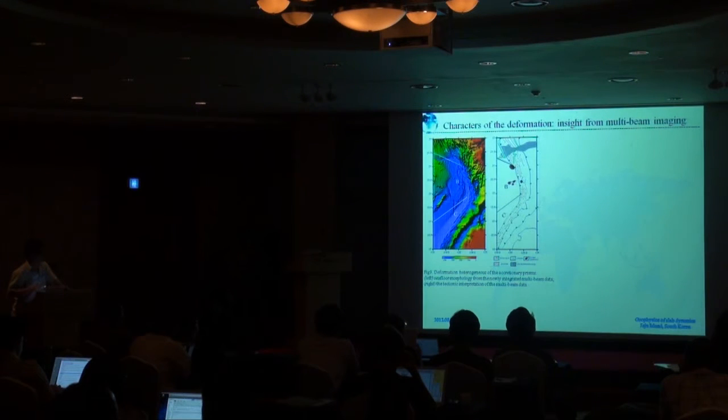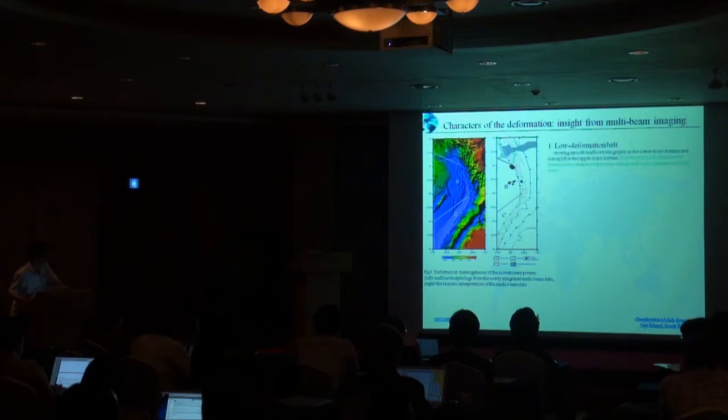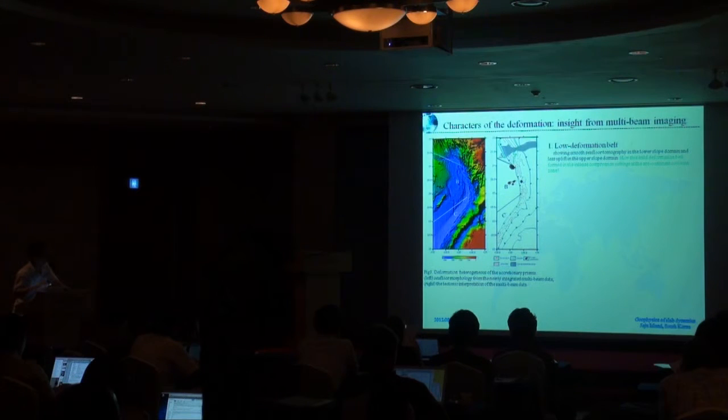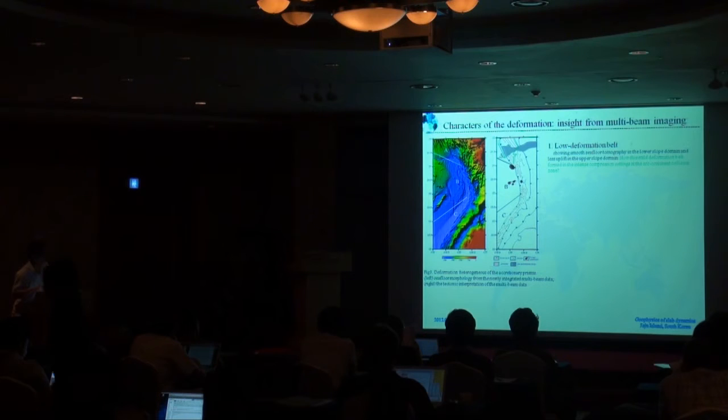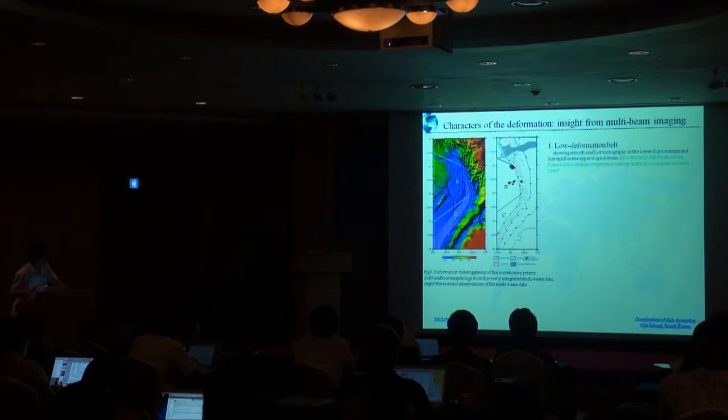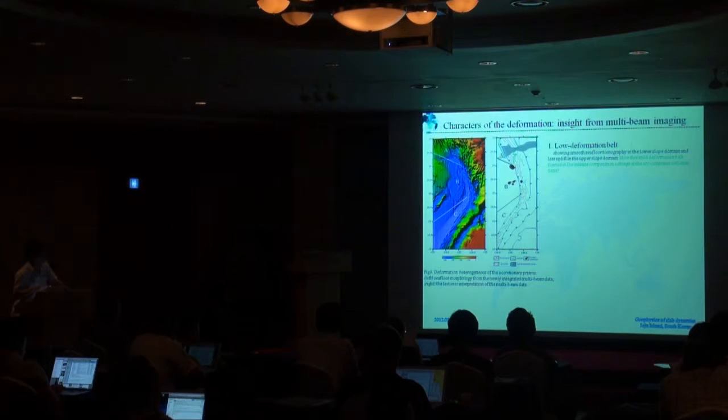First we look into the character of the deformation from the seismic imaging and the bathymetric morphology imaging. From north to south there are two special characters of this area. The first is a low deformation belt at the northern part. It is formed in the intense compression settings and ongoing collision zone, so it doesn't make sense for us today, but we will talk about the reason for this character.